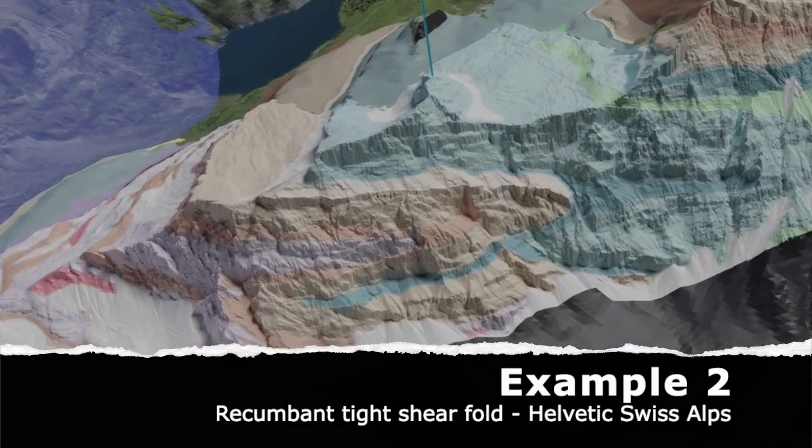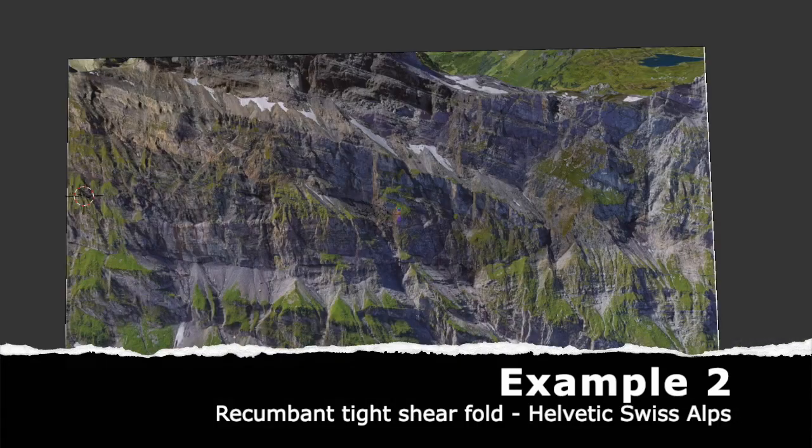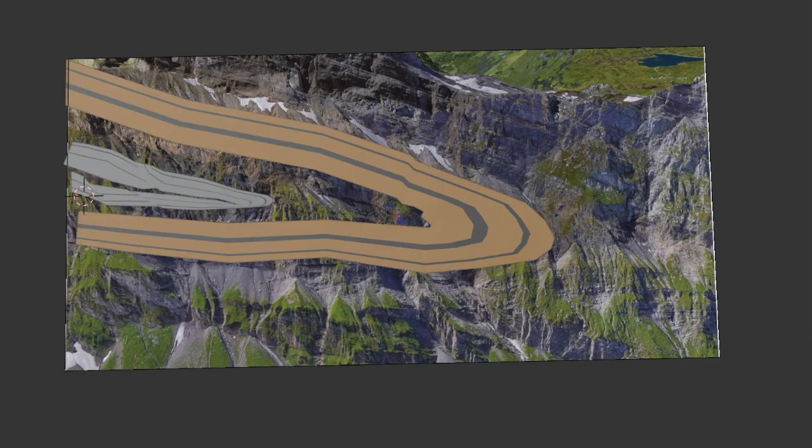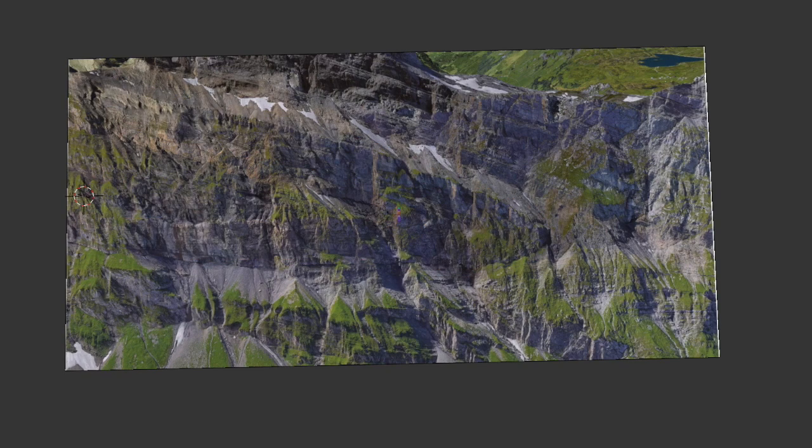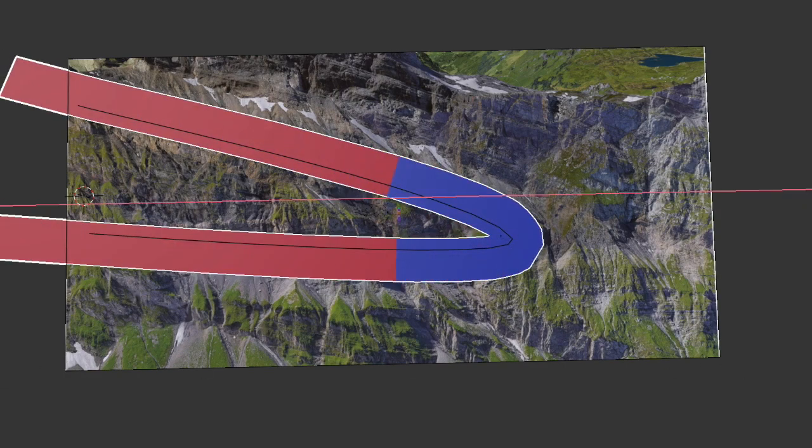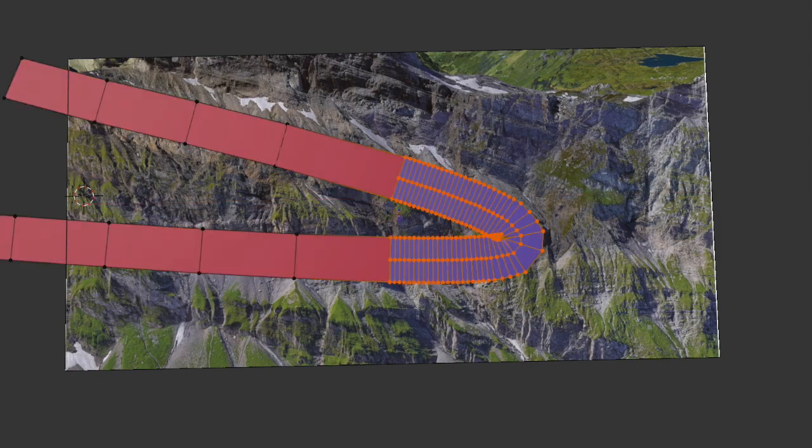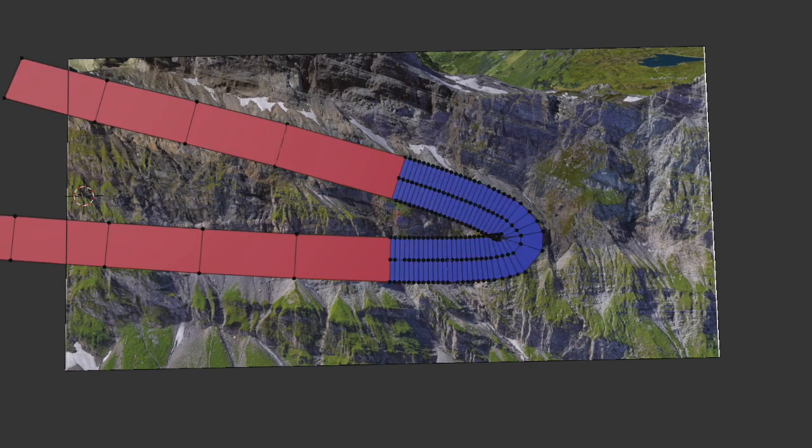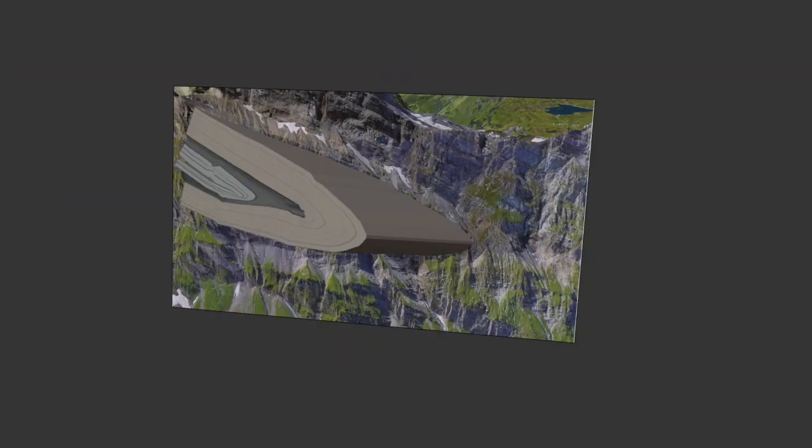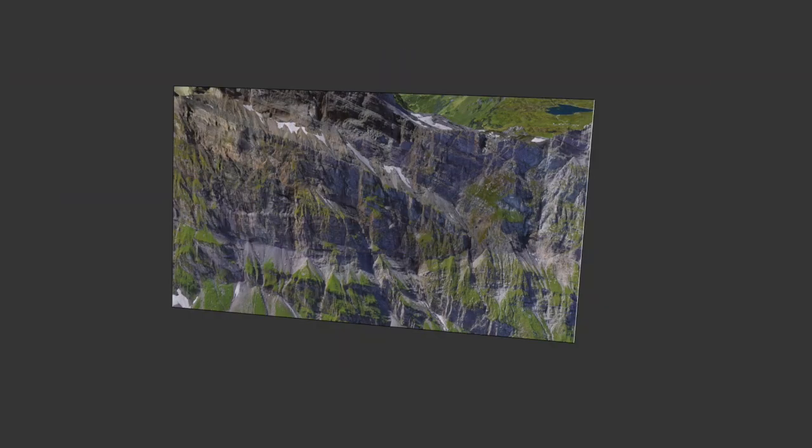We will now move on to our next example, which involves constructing a recumbent tight sheared fold of the Helvetic thrust and fold belt. This fold was formed under several kilometers of overburden at elevated pressure and temperature conditions, with a combination of brittle to ductile deformation mechanisms at force. Unlike the first example, we will not be using the modifier deform with a curve to construct this fold. This is because the tight bend of the fold requires a high subdivision in the area shown in blue, and secondly, the outcrop is oriented obliquely to the fold orientation.